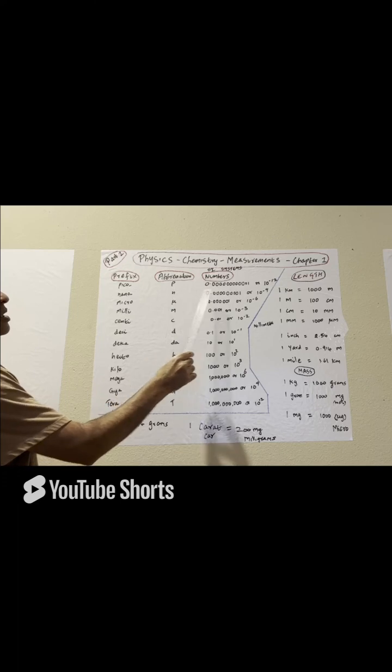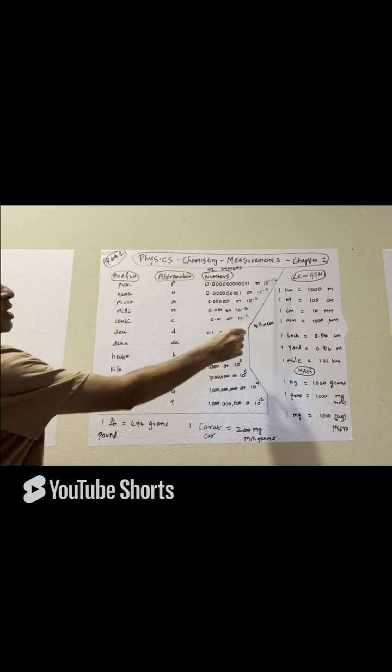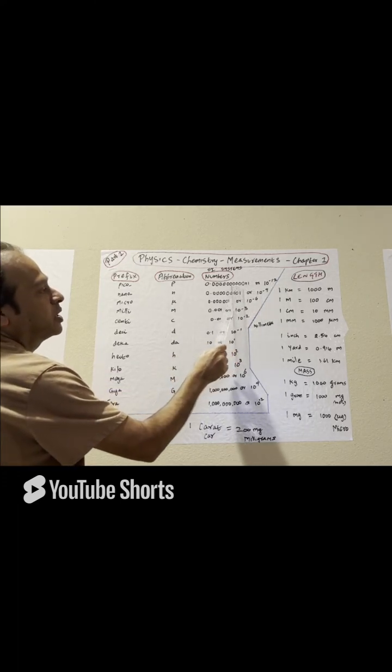Pico, this P, 10 to the power negative 12. So there's one here, you've got to put 11 zeros.